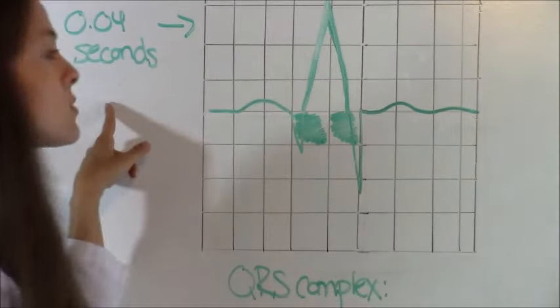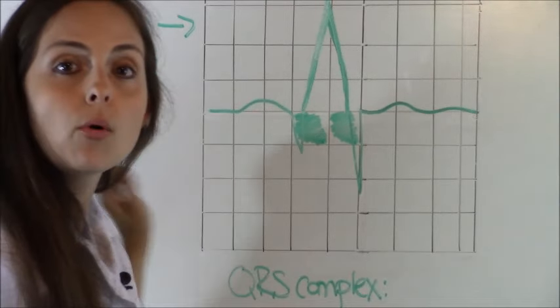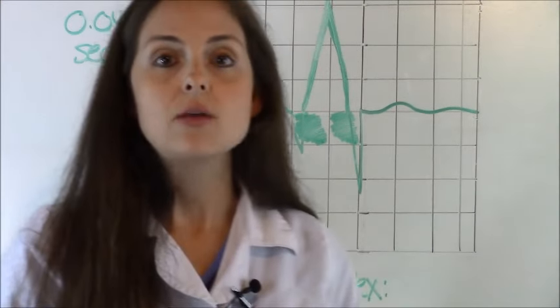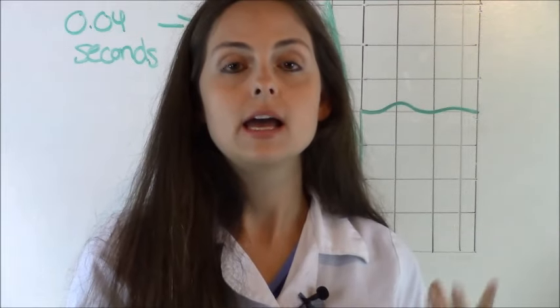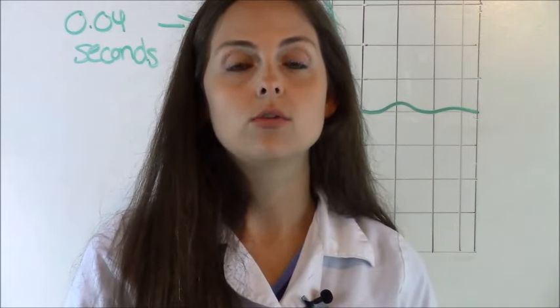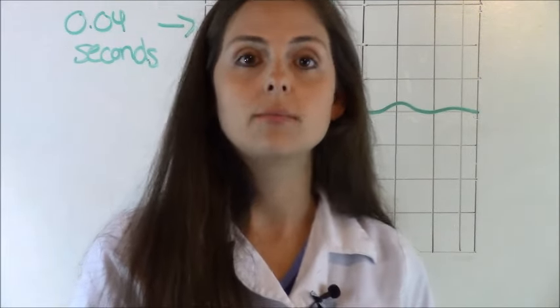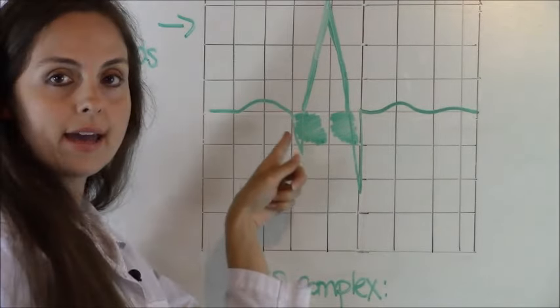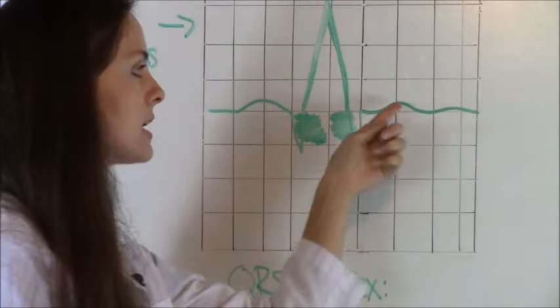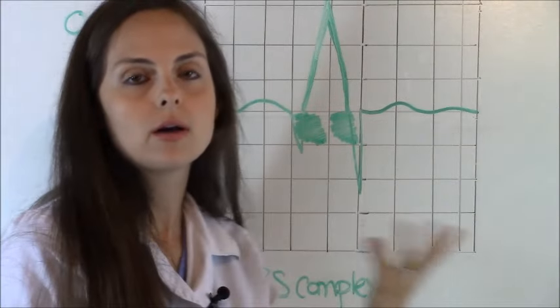So each small square represents 0.04 seconds. And for a QRS complex, remember you need one and a half to three of those in order to equal the right measurement for a QRS complex. So let's look at our EKG strip. We have the P wave, the QRS complex and the T wave. And sometimes a person has a U wave.